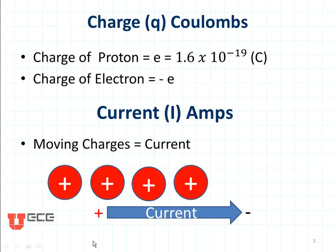Current moves from positive voltage to negative voltage as shown here. Anytime we draw a current, we draw it as an arrow with a plus at the back and a minus at the front.